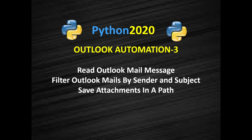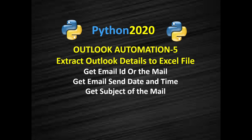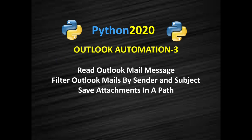We will also see how to save attachments to a structured path, which is a very common requirement in email automation. This was covered in the first video. We have also seen how to automate Outlook email sending using Python and how to send bulk emails. Finally, we will see how to extract email information into an Excel or CSV file.